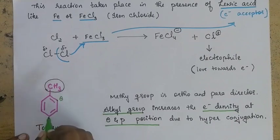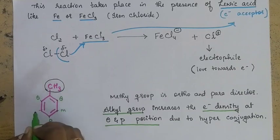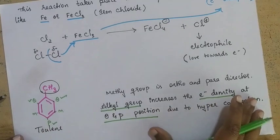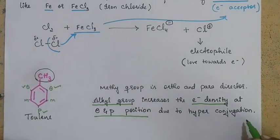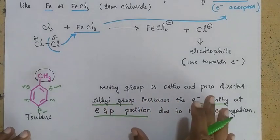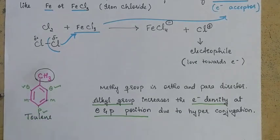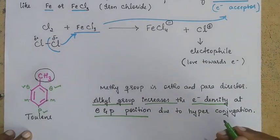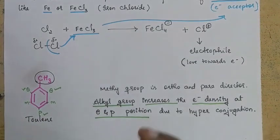The ortho positions are adjacent to the methyl-bearing carbon, the para position is directly opposite, and the remaining two are meta positions. In ortho and para positions, the electron density is very high when benzene is attached with an alkyl group due to the hyperconjugation process. So whenever electrophilic substitution reaction takes place with toluene, the ortho and para positions are rich in electrons, and the final product is going to be at the ortho and para positions.